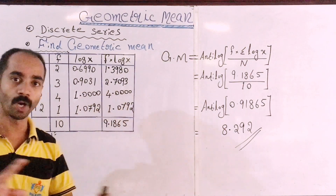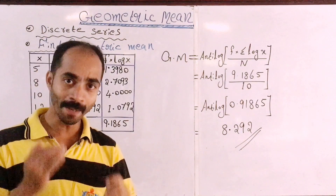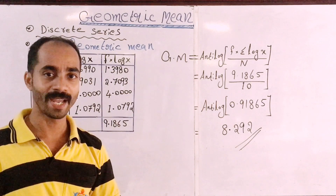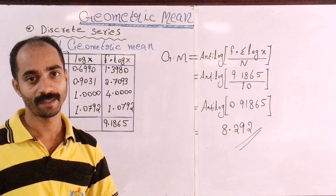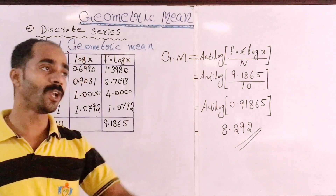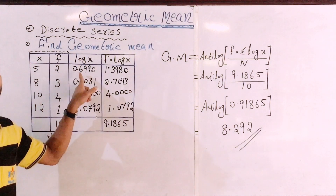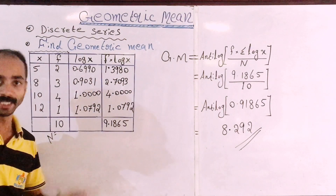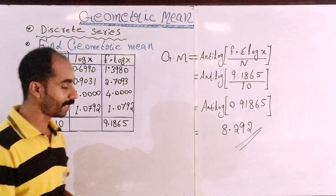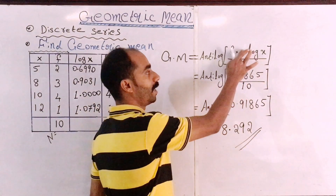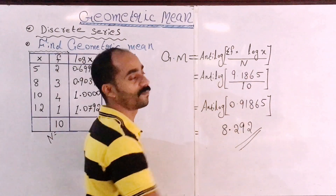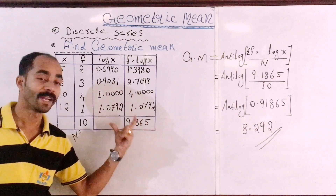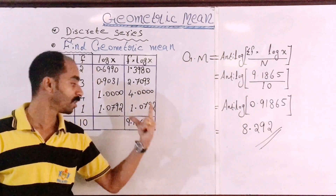Now computing F into log X: 2 into 0.6990 equals 1.3990; 3 into 0.9031 equals 2.7093; 1 into 1.0792 equals 1.0792. Adding these up gives sigma F into log X.